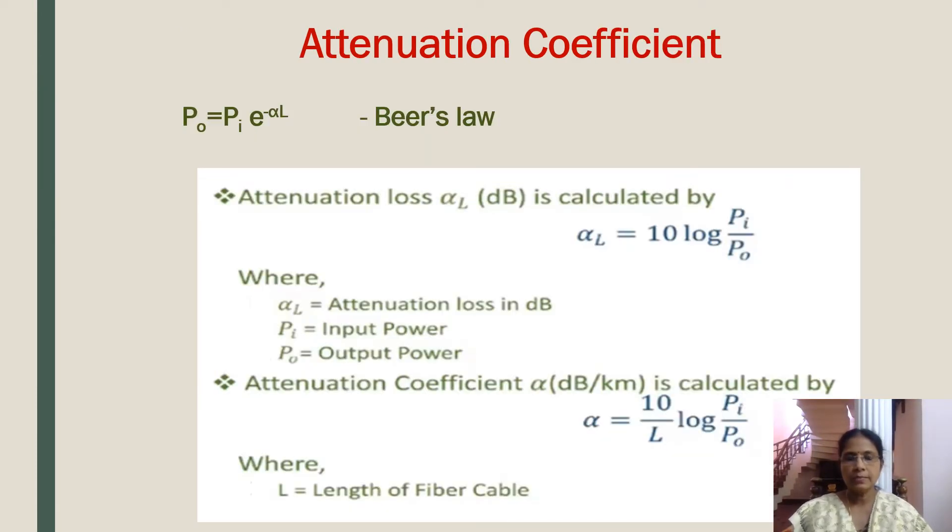The relation between output power and input power is Po equal to Pi e raised to minus alpha L. This equation is referred as Beer's law, which shows that the transmitted power decreases exponentially with the propagation distance within the fiber.